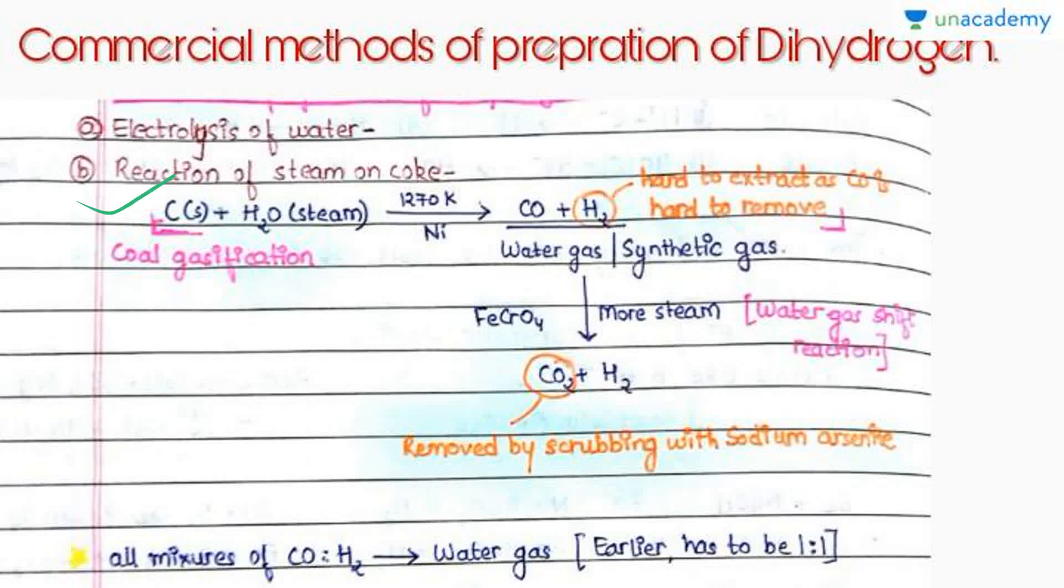The next way is when we pass steam through coal at a very high temperature like 1270 Kelvin in presence of nickel catalyst. What we get as product, that is carbon monoxide and hydrogen gas, is known as water gas or synthetic gas.